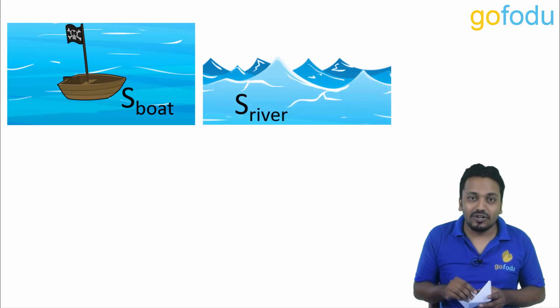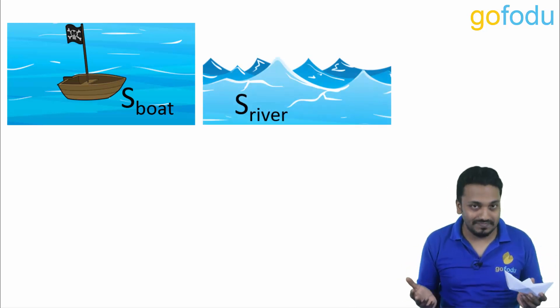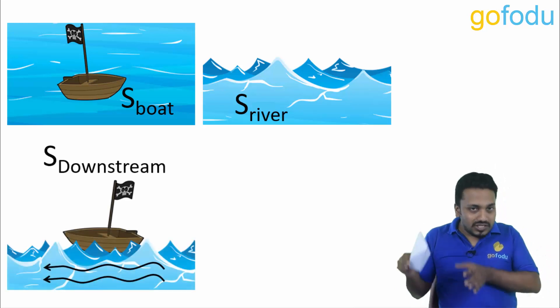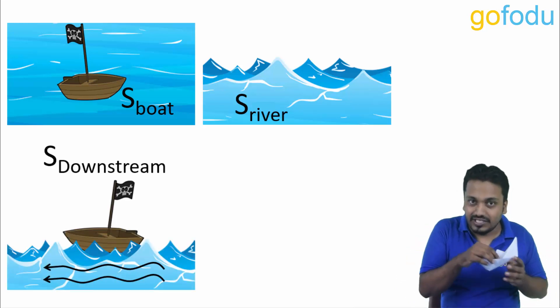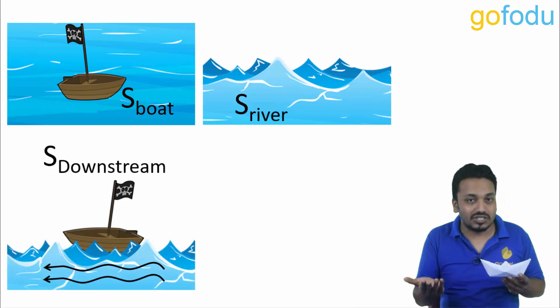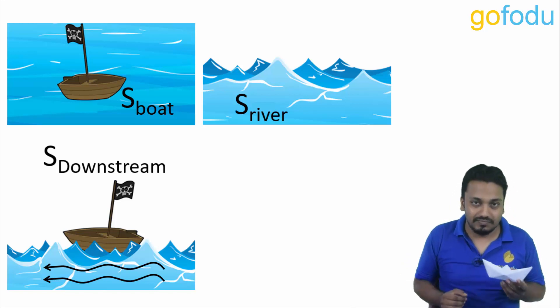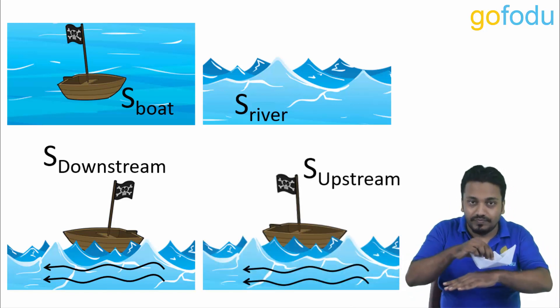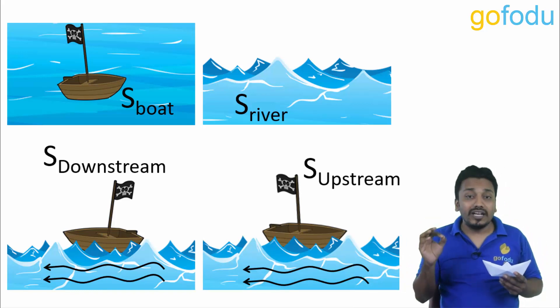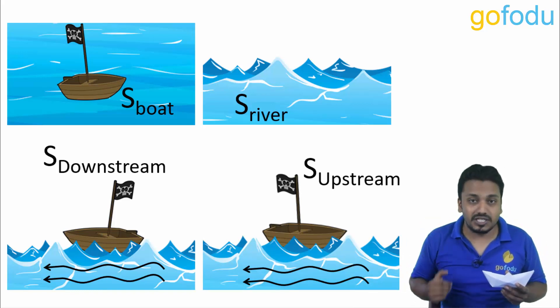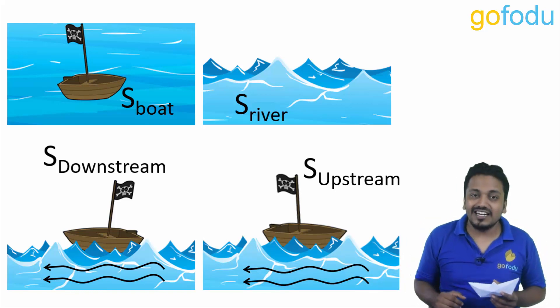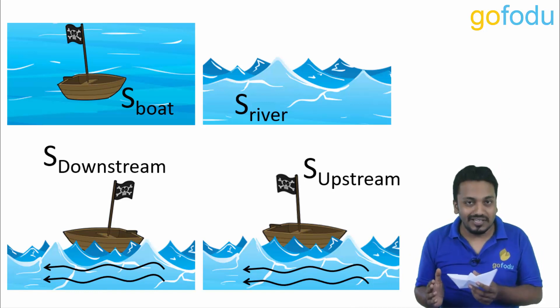Then there is speed of stream, the speed with which the river flows. When the boat flows in the direction of river current we say that the boat is going downstream with a speed downstream. When it goes opposite to the river flow we say it is going upstream with a speed upstream.